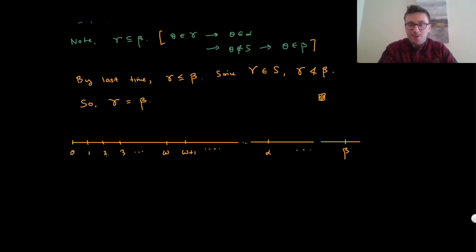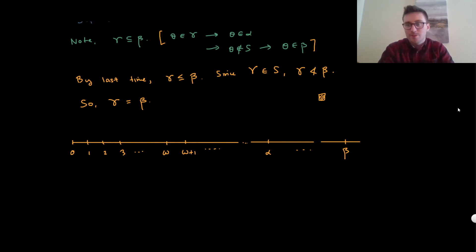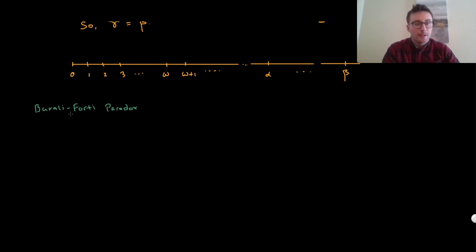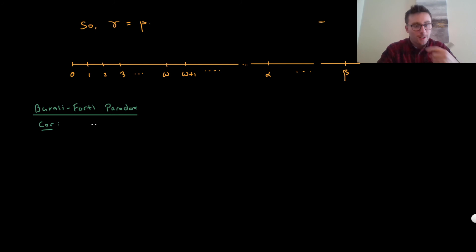What we're going to argue right now is that there is no set of all ordinals. This line is what's called a proper class — there's no set of everything, but it makes sense to talk about all the ordinals at once because we can define what an ordinal is. This is called the Burali-Forti paradox. I personally think of paradox here as counterintuitive — it doesn't mean it's false. The claim is that there is no set, call it big omega, of all ordinals.